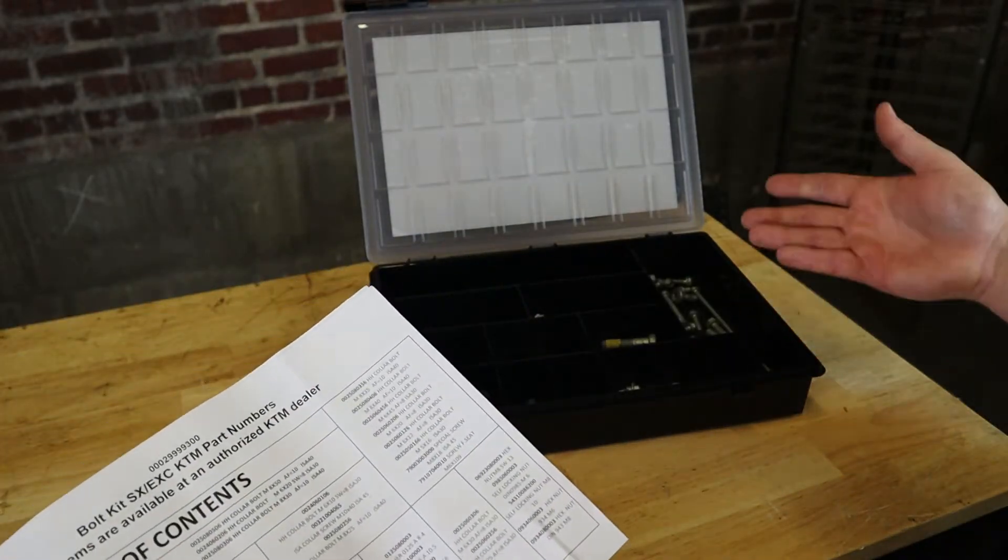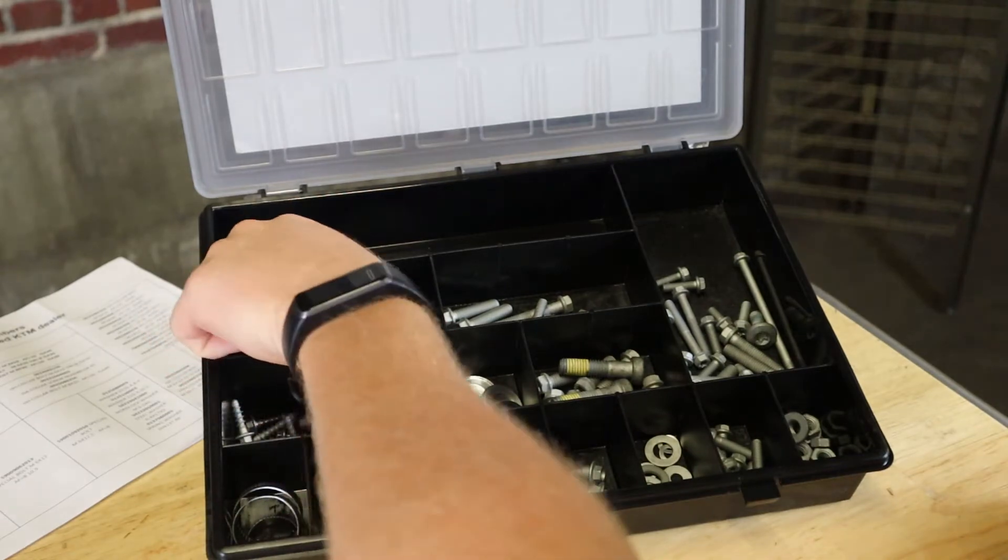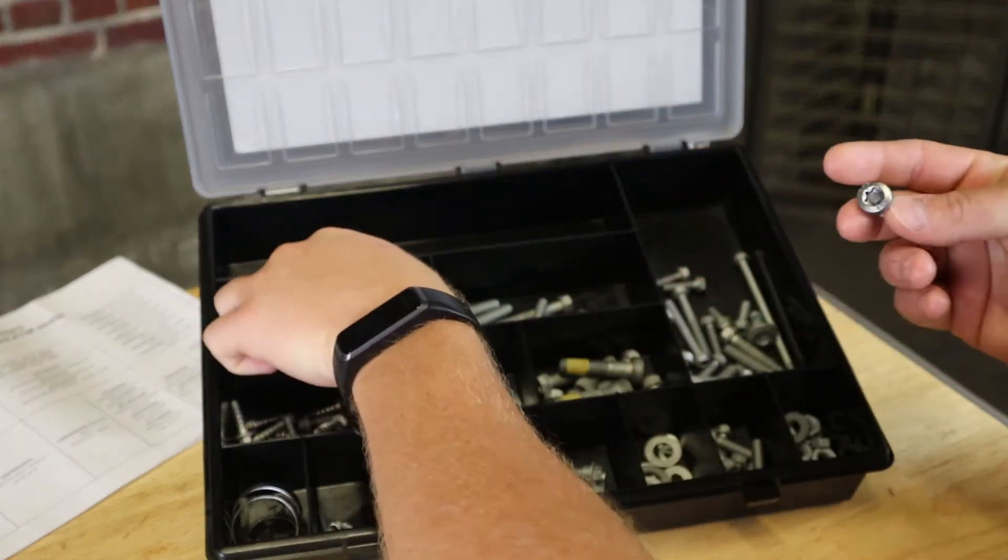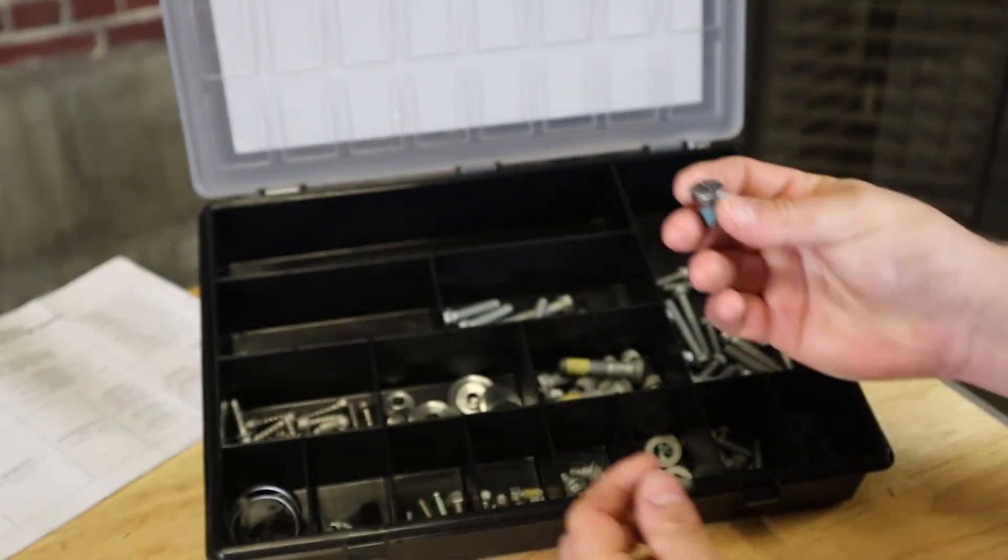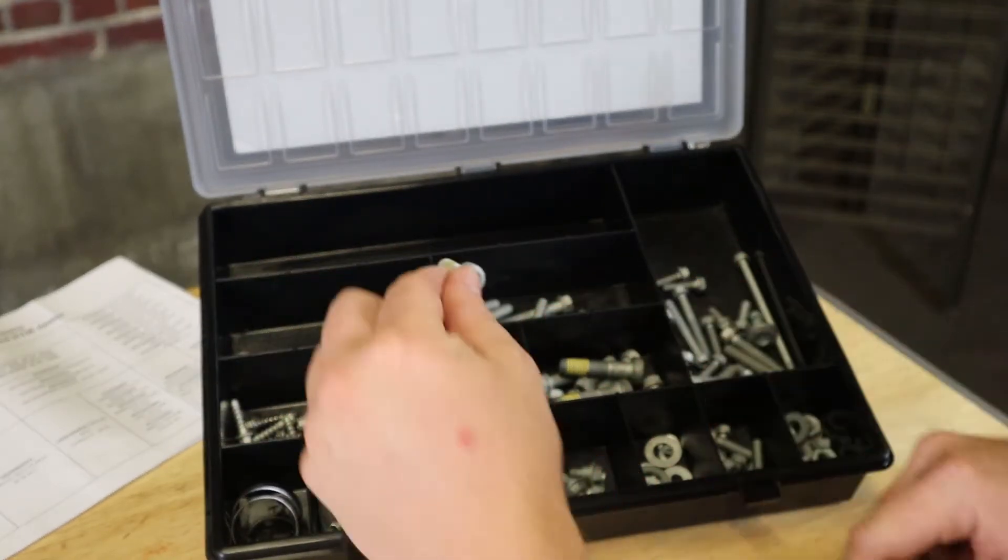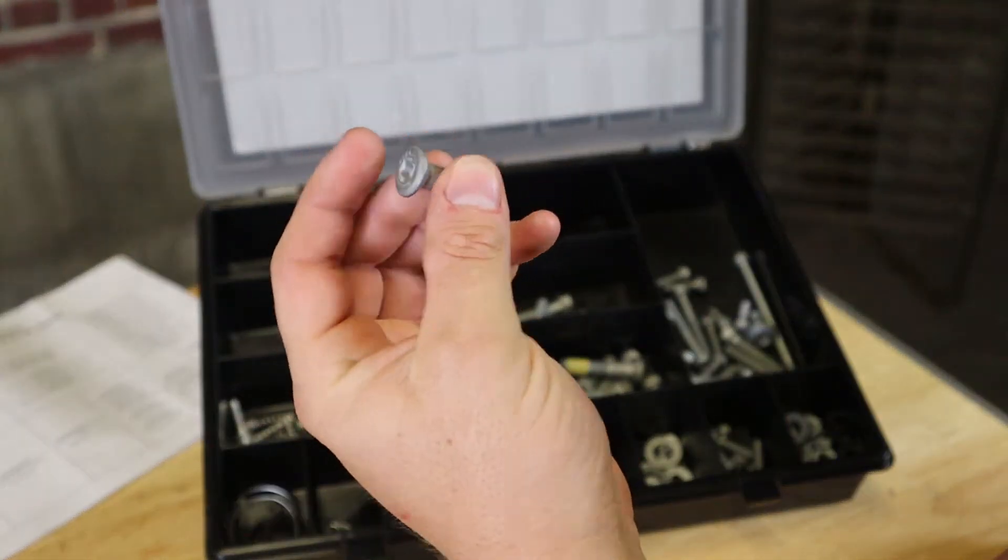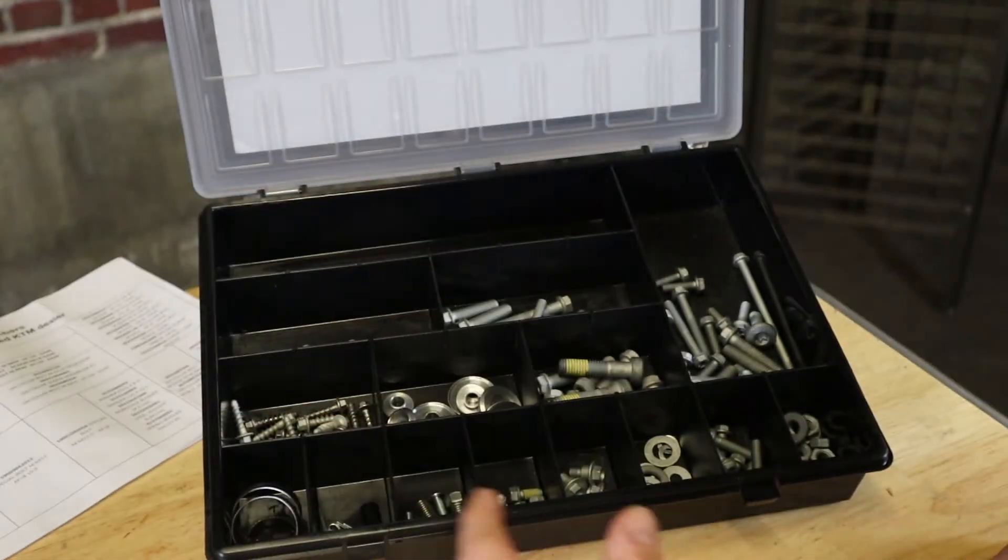So let's go over some of the stuff that comes in the kit. Starting with this tray right here. These are your Torx M8s. You get your countersunks, you get your flats. These already are impregnated with Loctite. These can be tough to find at the hardware store too. So that's a good start.